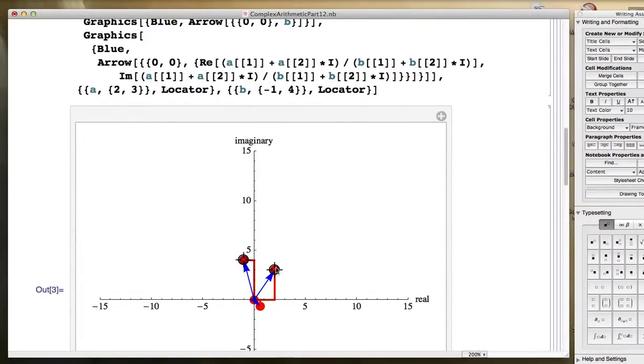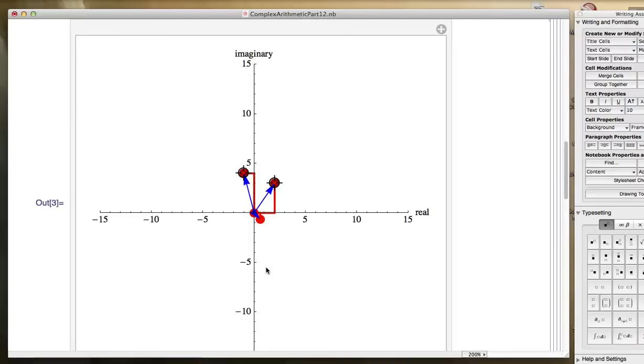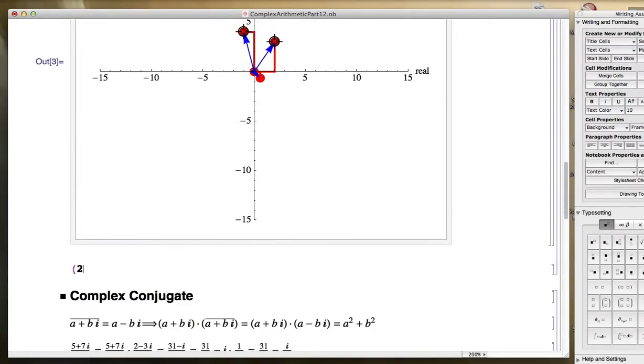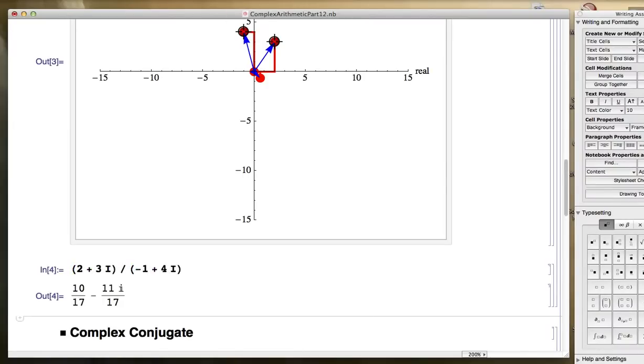And I believe it's now ready to illustrate complex division geometrically. So it's going to be this complex number, which is 2 + 3i, divided by this complex number, which is -1 + 4i, is going to be the initial division done to give you the complex number down here. What complex number is that? 2 + 3i, divided by -1 + 4i, 10/17 - 11/17 i. You can see it's positive real part, 10/17, and negative imaginary part, -11/17.